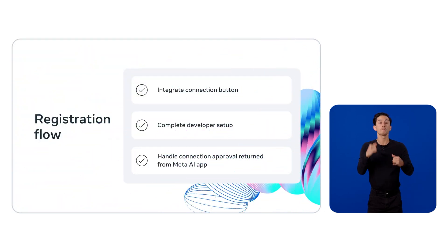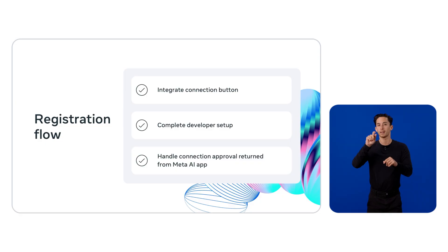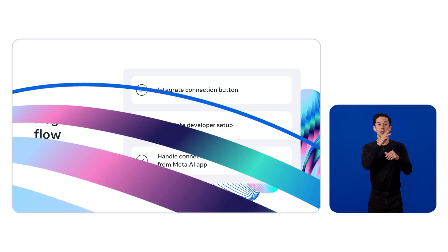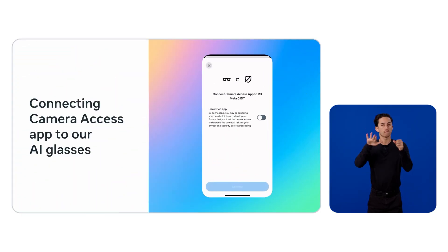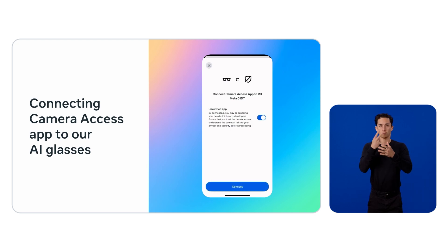Finally, you need to handle the connection approval returned from the Meta app. Based on your app's profile in the Wearables Developer Center, the Meta app will broker to allow registration and configuration. When the connection flow is started, the button deep links to the Meta app for approval. After approval, the flow seamlessly returns your application to complete registration. Here, you'll handle the callback and complete the flow. Behind the scenes of this entire registration process, there is a secure key exchange that both authorizes and authenticates your app.